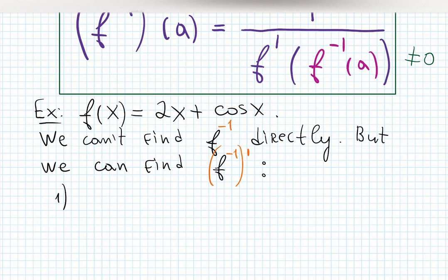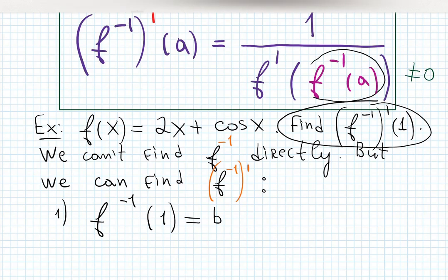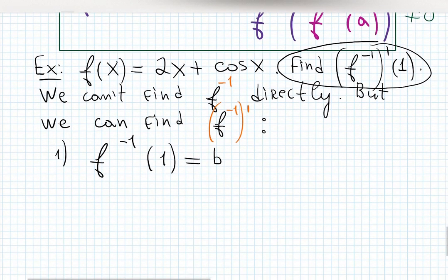The question is find the derivative of the inverse function at 1. We're looking for (f^(-1))'(1), which means looking for some b. We need this because it's in the formula. Inverse function at 1 equals b means, by definition, f(b) = 1. Inverse of 1 equals b means f of b equals 1 - we're just exchanging these two.